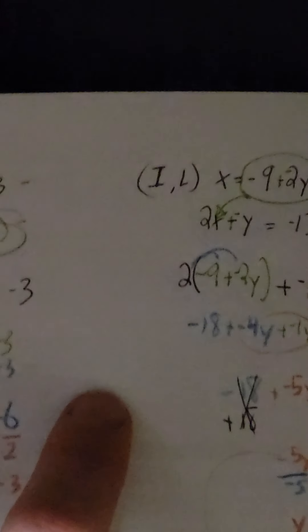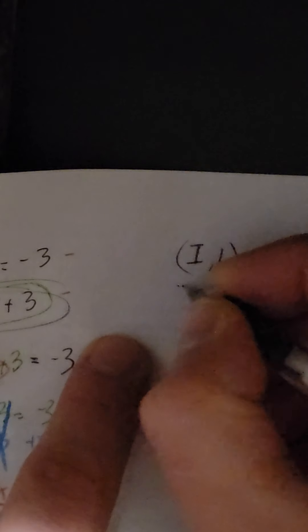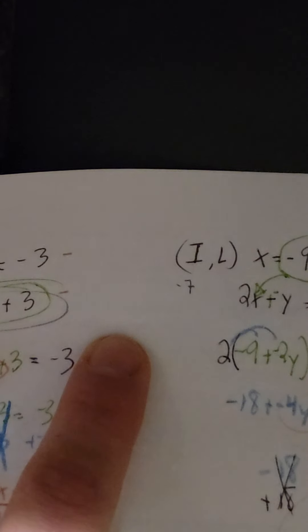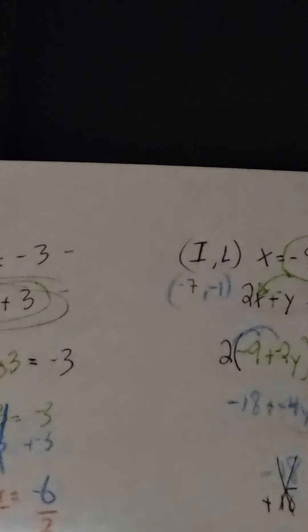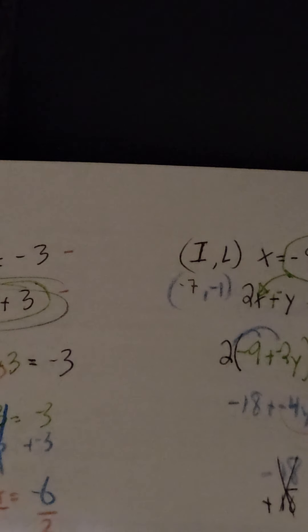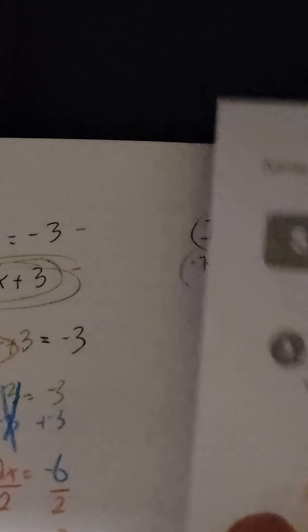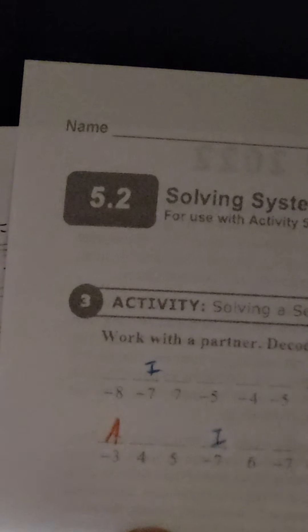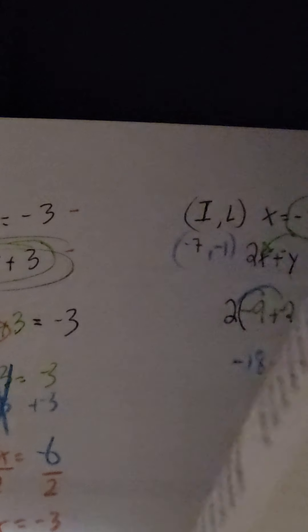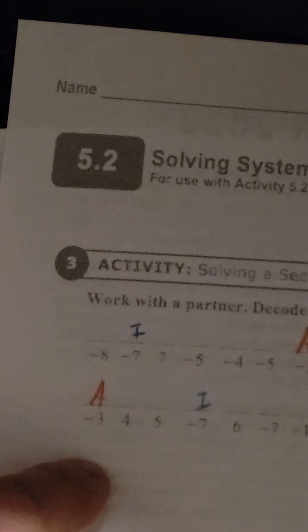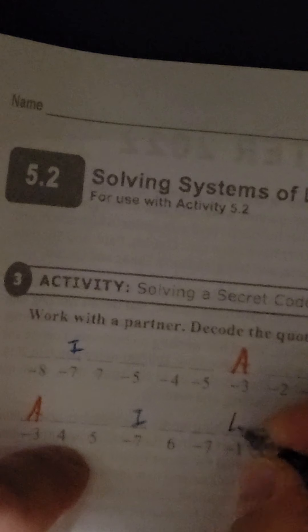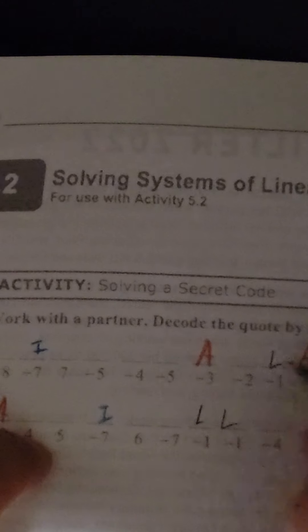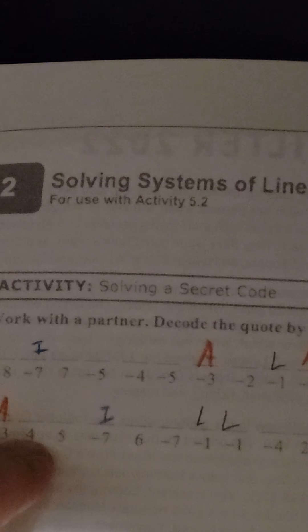So up here, again, the x value goes first, negative 7. And then the y value, negative 1. And you just go back through, careful, with your negative 7s. Not the positives, the negative 7s. Put in that I. Wherever you see a negative 7, all the way through. And then for the negative 1s, put in that L. Wherever you see a negative 1, put in an L. Be careful that you're watching those signs.